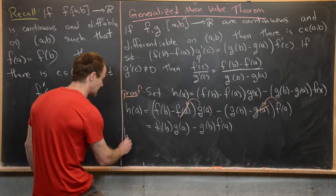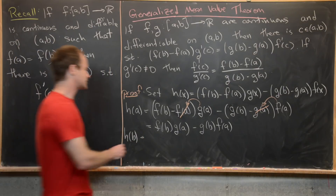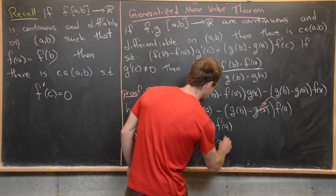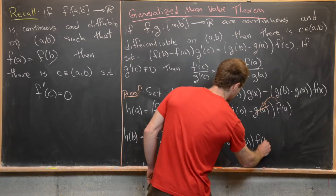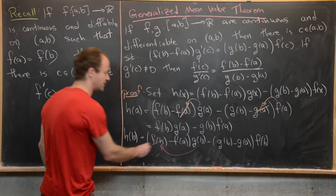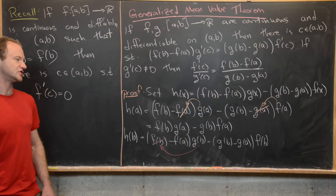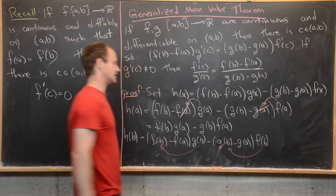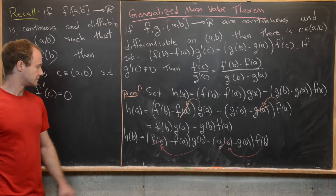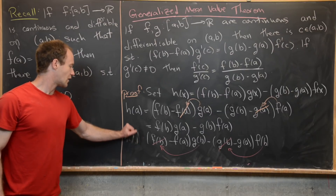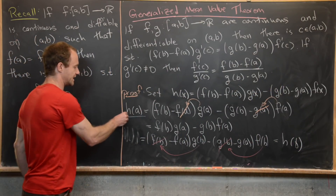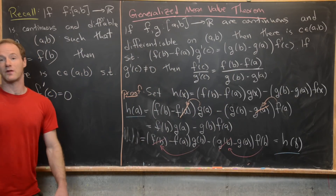Now checking h(b): we get [f(b) − f(a)] · g(b) − [g(b) − g(a)] · f(b). Similarly, the f(b) · g(b) terms cancel, and we're left with exactly the same expression f(b) · g(a) − g(b) · f(a). So h(a) = h(b), which means all the hypotheses of Rolle's theorem are satisfied and we can apply it.